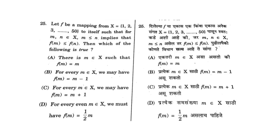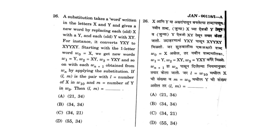Moving on to the next question, this was a mathematical question. I am not of a mathematical background, so I solved it with help from my friends. The correct answer for this 25th question of booklet A is A. The correct option is A — there is M epsilon X or whatever it is, so the first option, A, is correct.